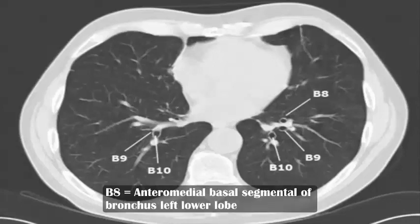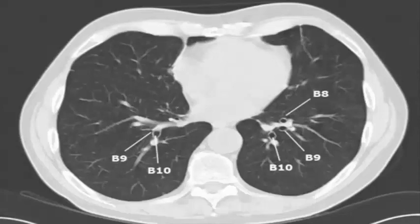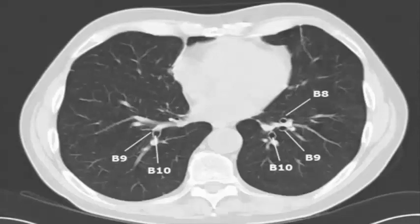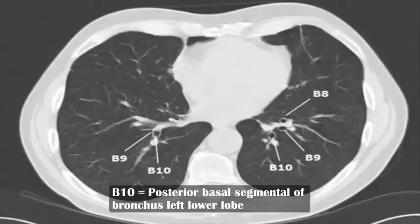V8 anterior basal segment of bronchus left lower lobe, V9 lateral basal segment of bronchus left lower lobe, V10 posterior basal segment of bronchus left lower lobe.